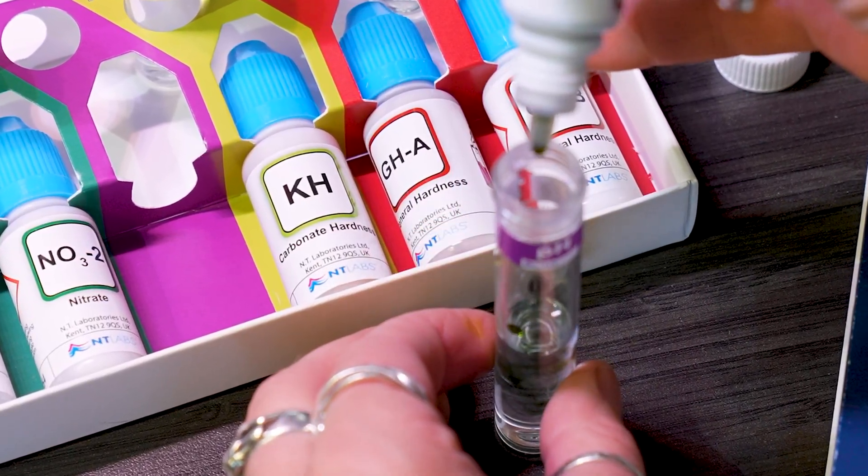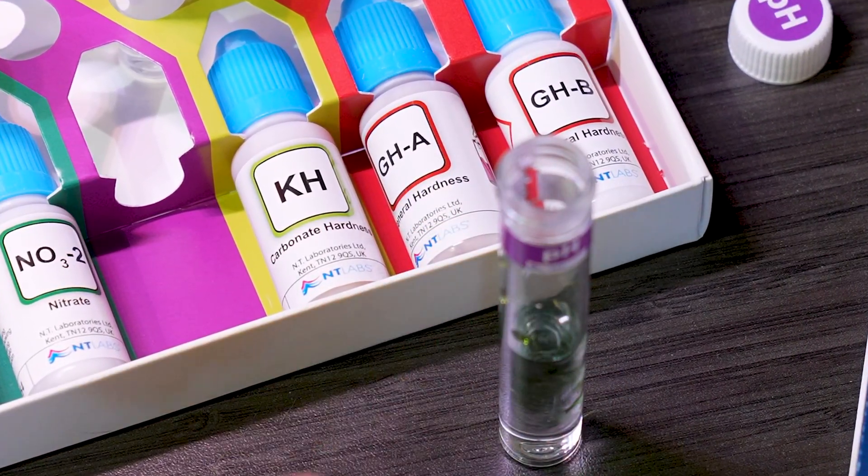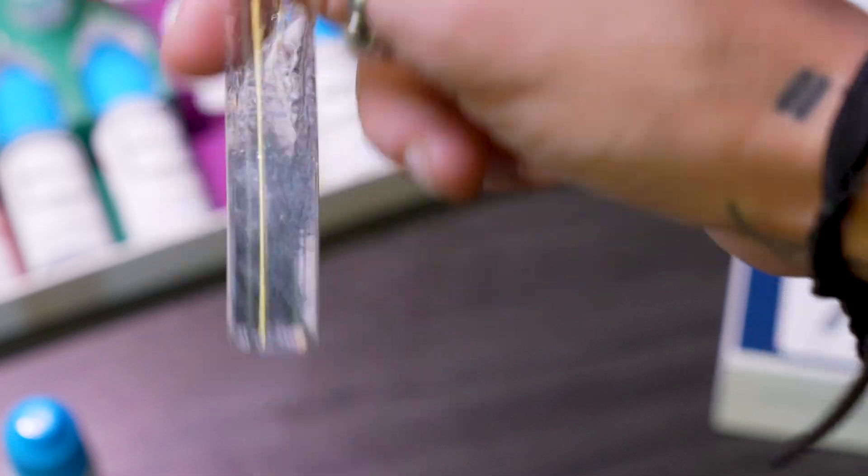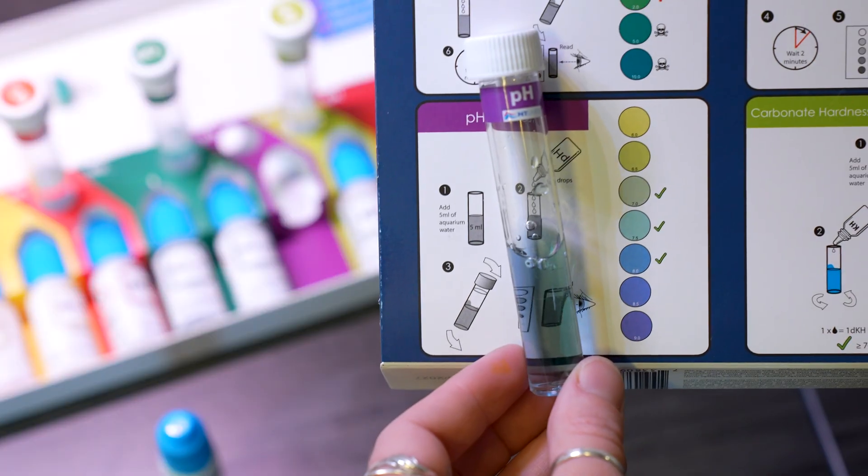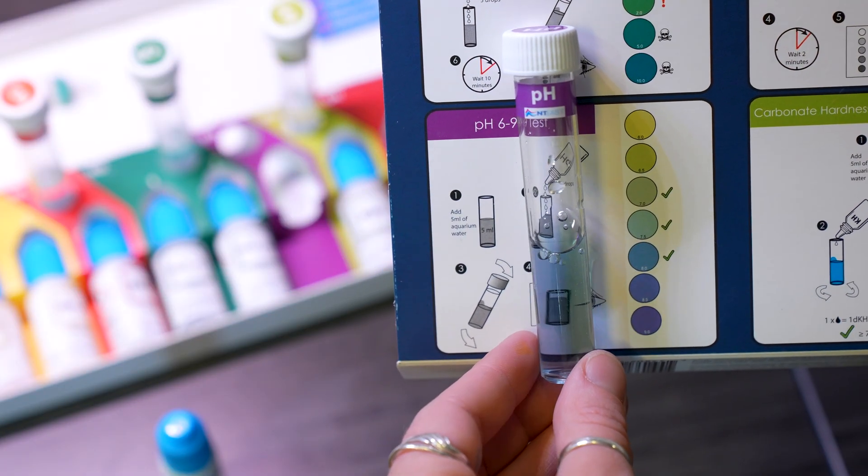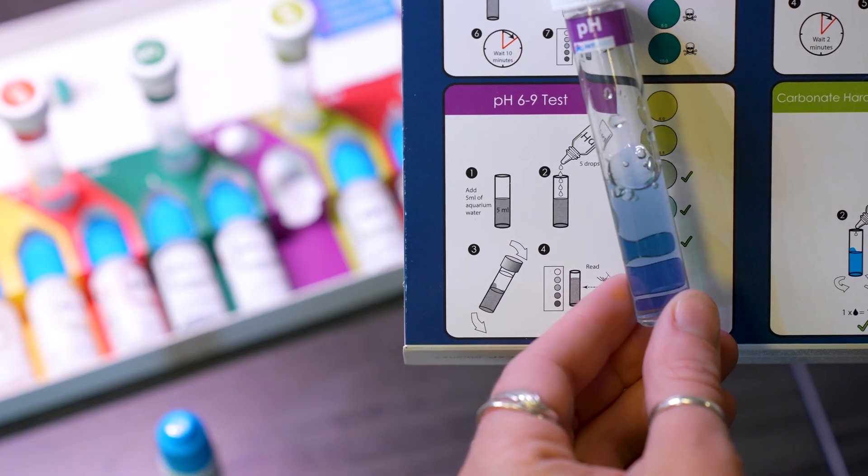I'm putting in five drops of the reagent. I'm then just going to give it a bit of a swirl, or in this case, shake. And then simply compare it with the color-coded graphic here to find your levels. It looks like I'm sitting right in the range where I want to be.